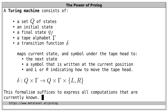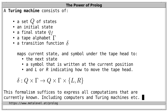This formalism suffices to express all computations that are currently known. It is widely believed that every mechanical computation can be expressed with Turing machines, so we can use the expressive power of this mechanism as a definition of what we mean by computable. Everything that a modern computer can do can also be modeled in this way, and this mechanism can also express its own workings — we can write a Turing machine that takes the description of a Turing machine as input and performs the calculations that machine would perform.